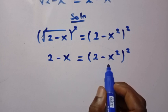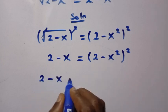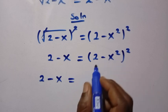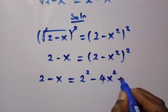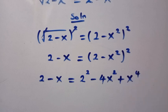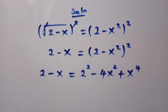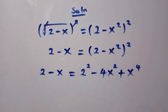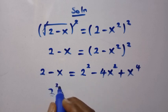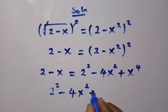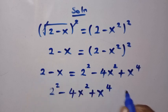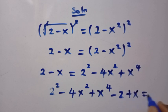Then we have to expand this. When we expand we have 2 minus x equals the expansion, which gives us 2 squared minus 4x squared plus x raised to the power of 4. So let's collect 2 minus x to this side. We have 2 raised to power 2 minus 4x raised to power 2 plus x raised to power 4, then minus 2 plus x, and this equals 0.